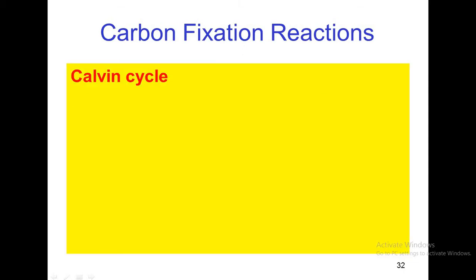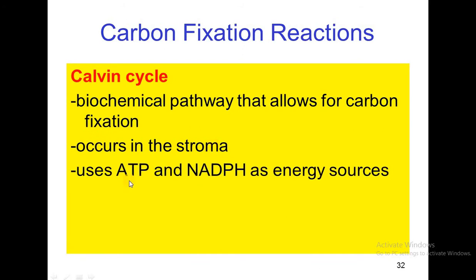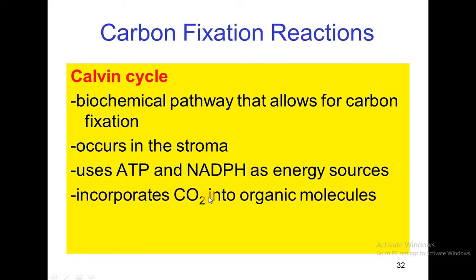The Calvin cycle is a biochemical pathway that allows for carbon fixation. This biochemical pathway occurs in the stroma of the chloroplast. It uses ATP and NADPH as energy sources and incorporates carbon dioxide into organic molecules.